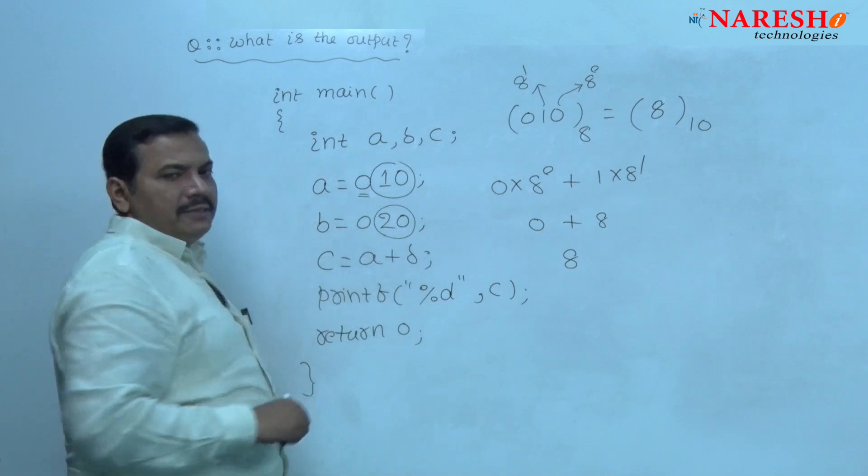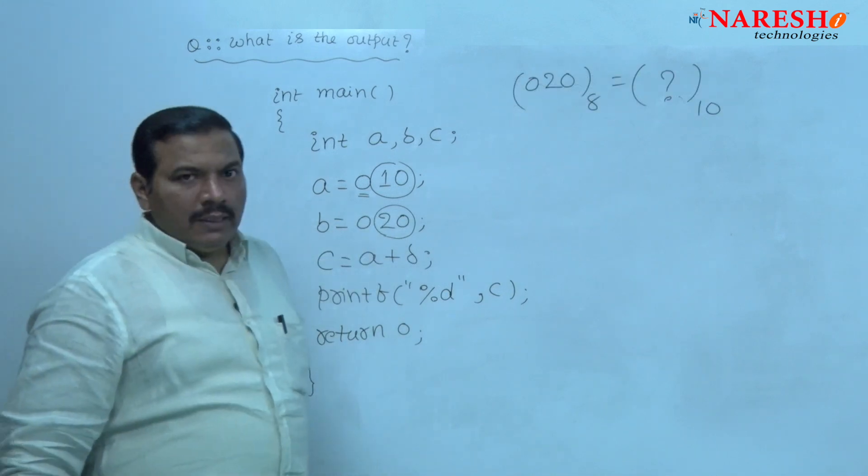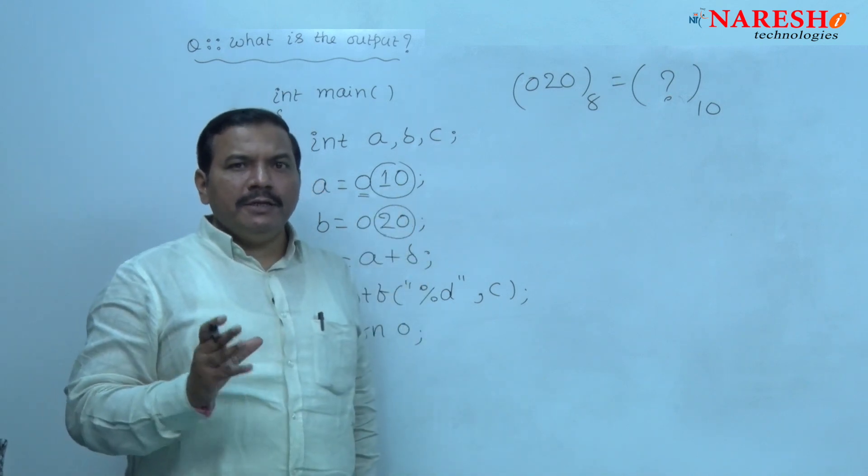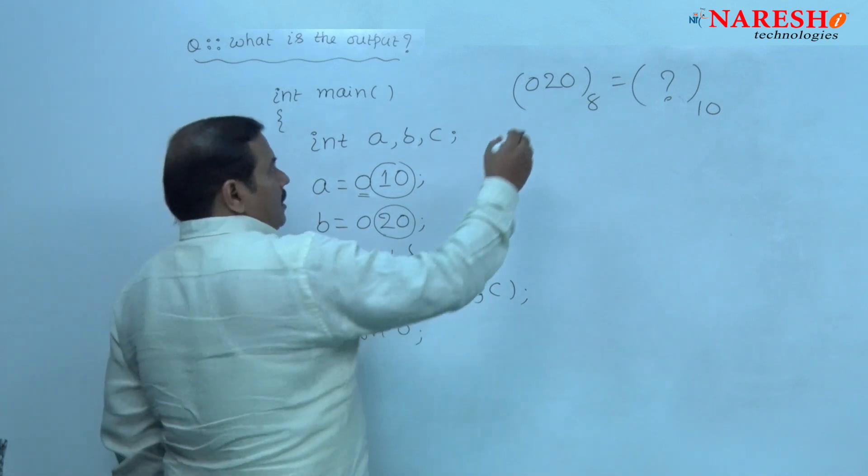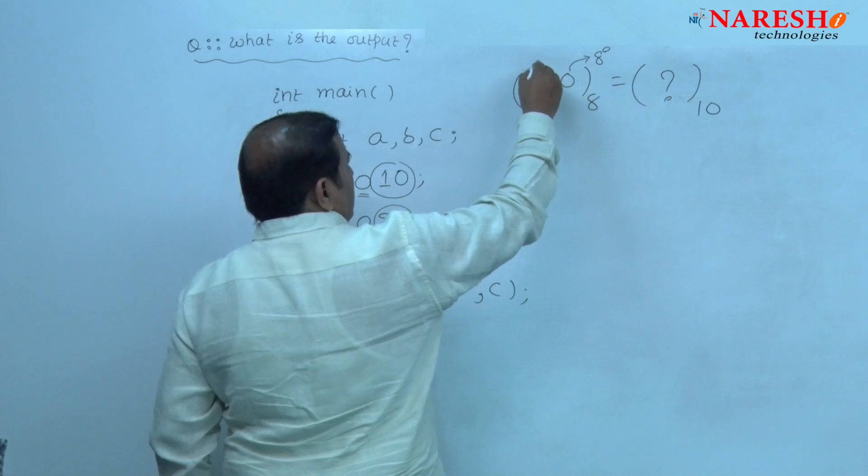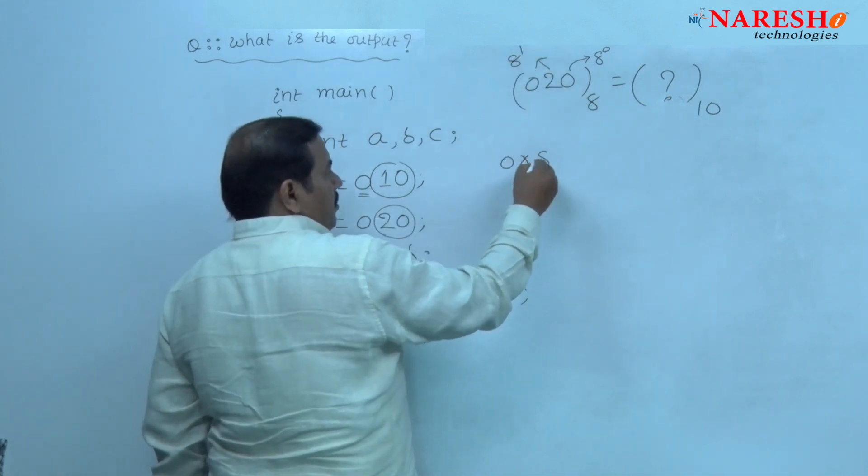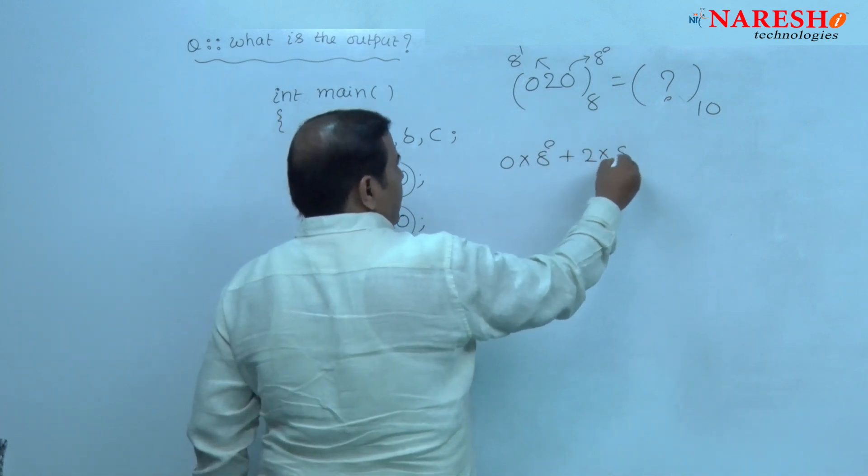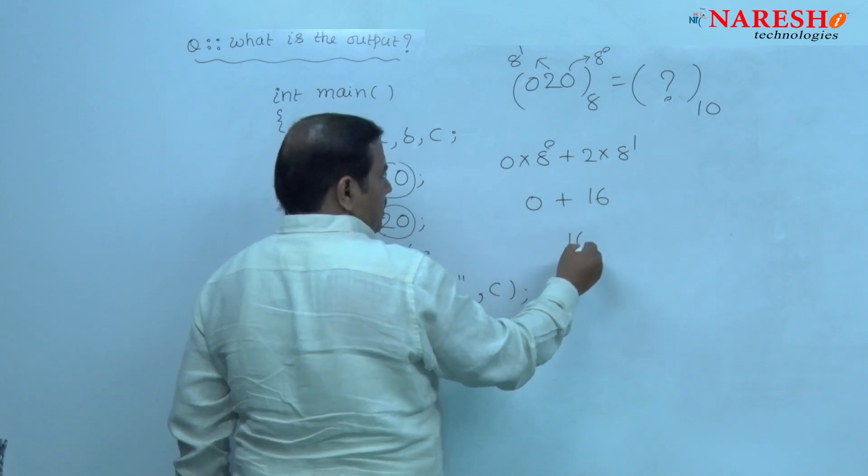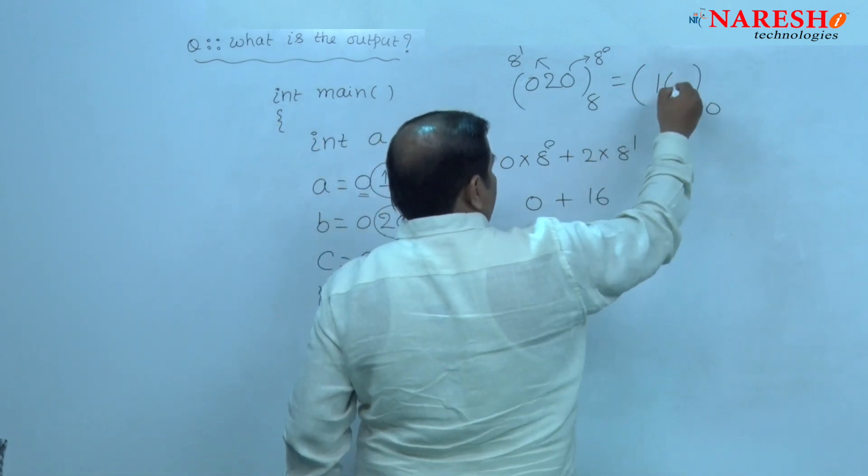Similarly, convert this octal integer 20 into decimal. What is the conversion of octal integer 20 into decimal? Weight of this digit 0 is 8 power 0, weight of this digit 2 is 8 power 1. Multiply each digit with its corresponding weight. 16 is the decimal value of this octal integer.